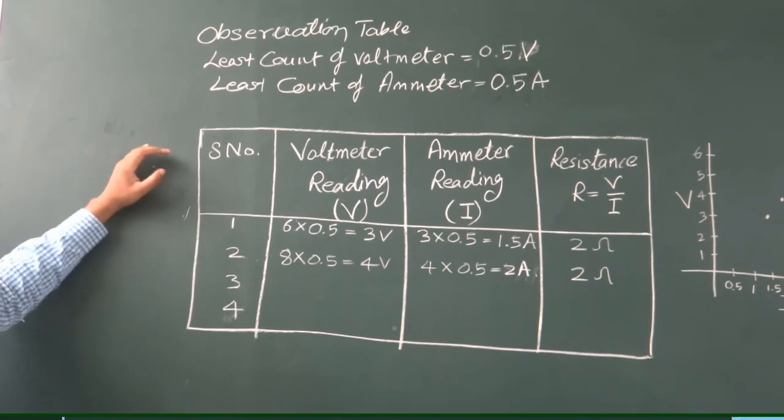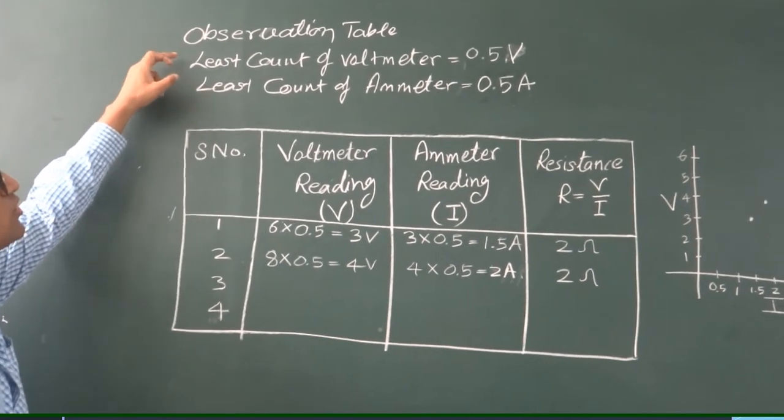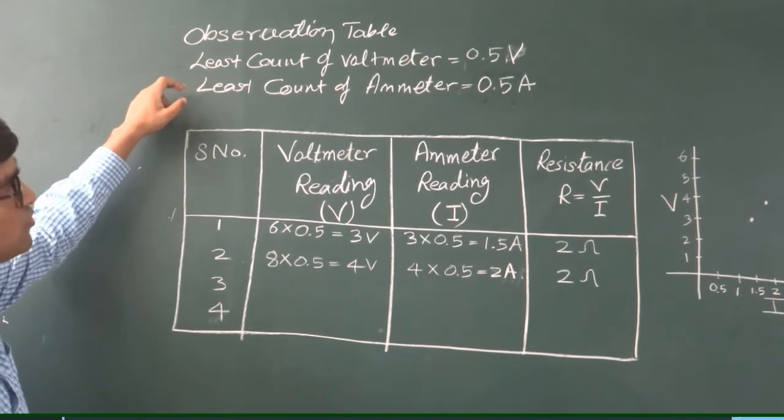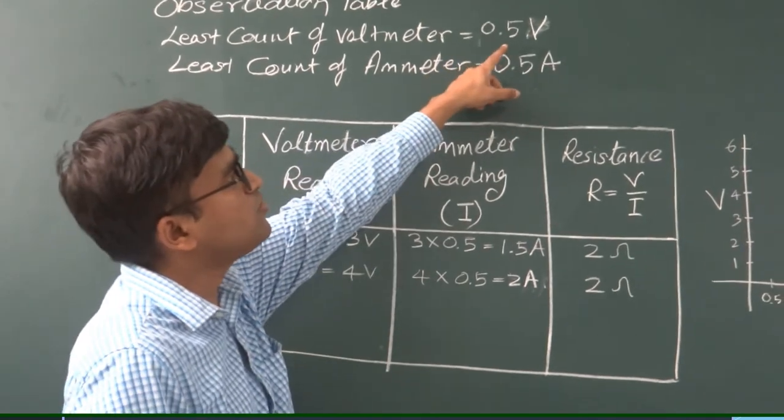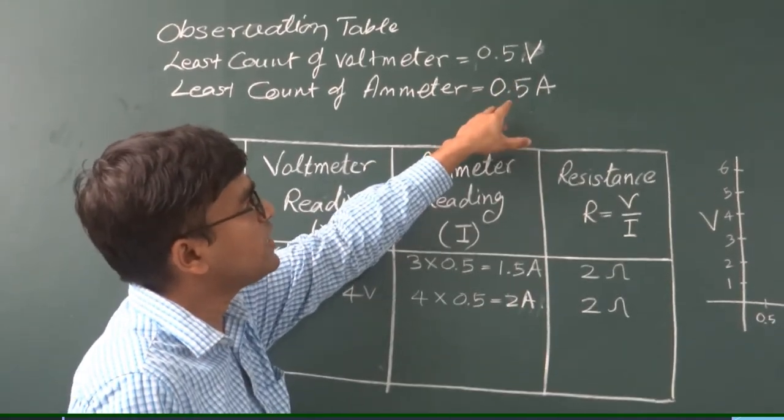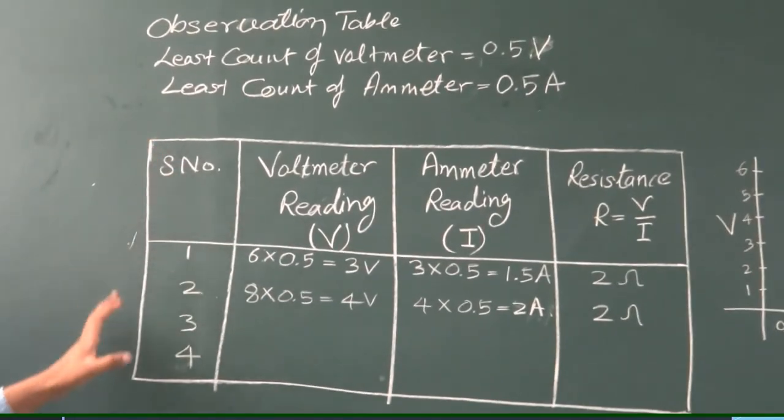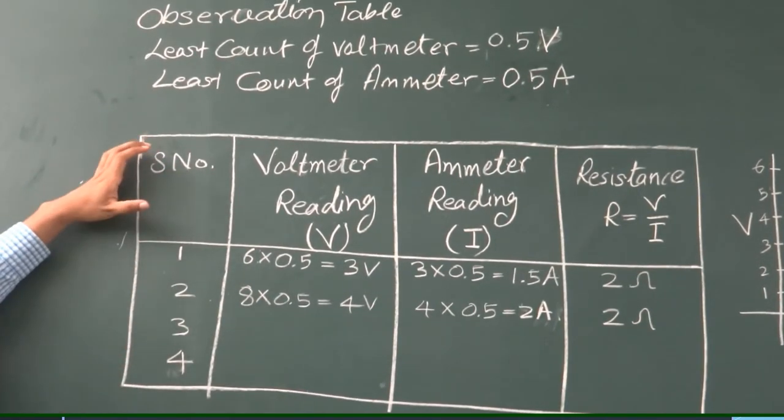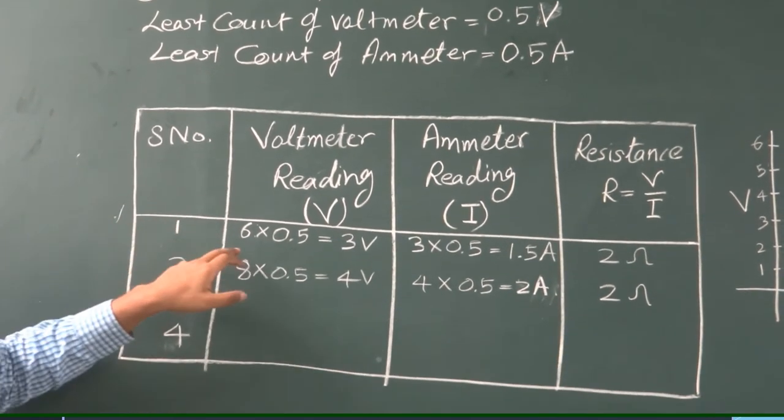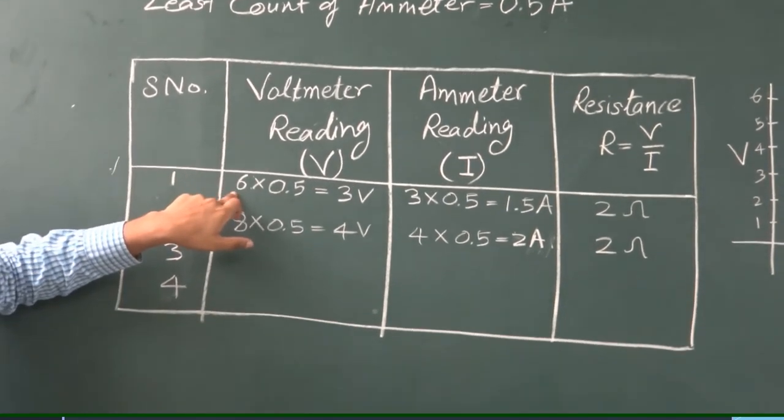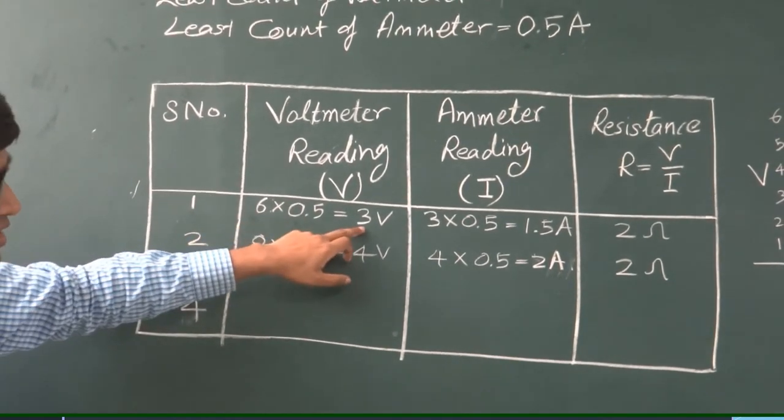So this is the observation table for the Ohm's law experiment. First of all you will note down the least count of your ammeter and voltmeter. Ammeter and voltmeter we have used 0.5 amperes and 0.5 volts as the least count. Then this will be your observation table with serial number. For the first set of readings we have got six divisions on the voltmeter. So you will multiply it by the least count. This gives you 3 volts.